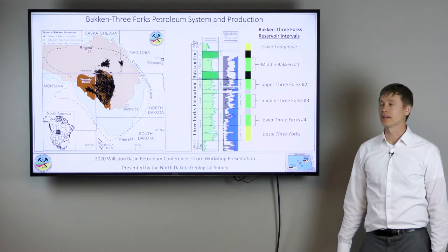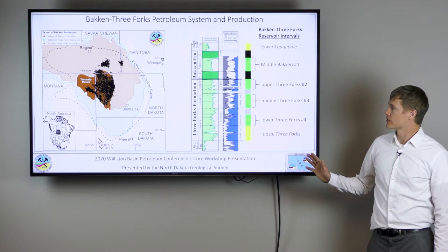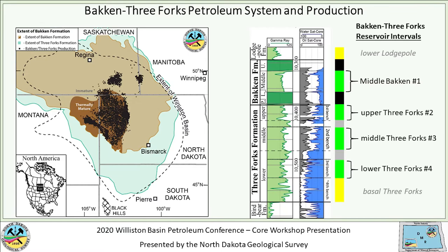On the right side are wireline logs showing a gamma ray through the Bakken Three Forks section. The high darker green intervals are your organic-rich upper and lower Bakken shales — your source rocks that have generated and expelled oil into adjacent units. The primary targets for horizontal well drilling are the middle Bakken and upper Three Forks. The upper Three Forks is a secondary target not far behind the middle Bakken in cumulative wells and production. Secondary targets include the middle and lower Three Forks, which industry refers to as the second and third benches.